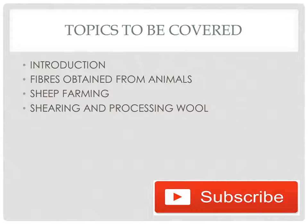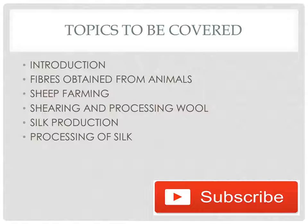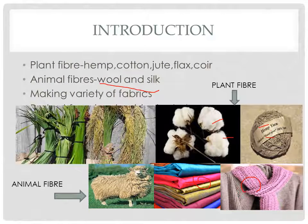Introduction: there are different natural fibers like plant fibers and animal fibers. We require them to obtain different varieties of fabrics that protect us from heat, cold, rain, etc. Plant fibers include hemp, cotton, jute, flax, and coir, while animal fibers include silk and wool.